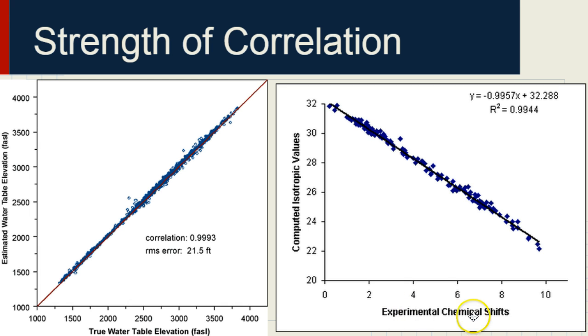And on the right, we have experimental chemical shifts on the x-axis and computed isotropic values on the y-axis. My apologies, I'm not sure what those two terms are referring to. Anyway, it's a very nice, tight correlation. And in this case, we have a negative correlation.